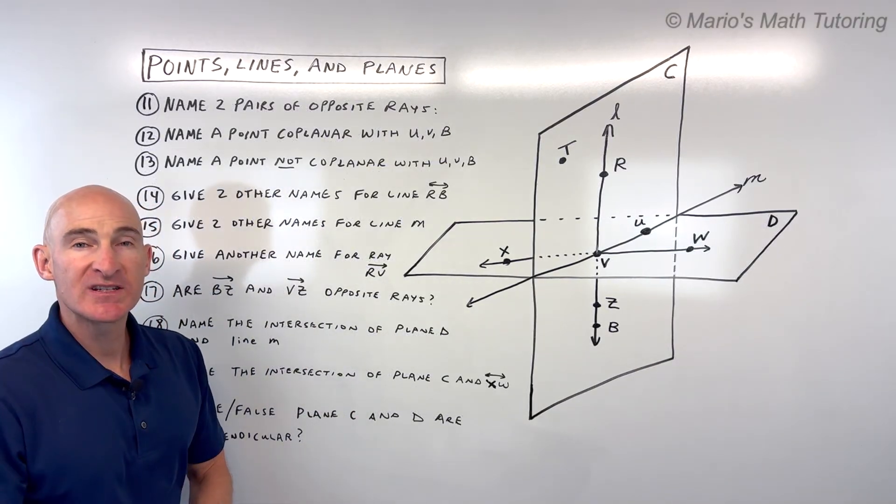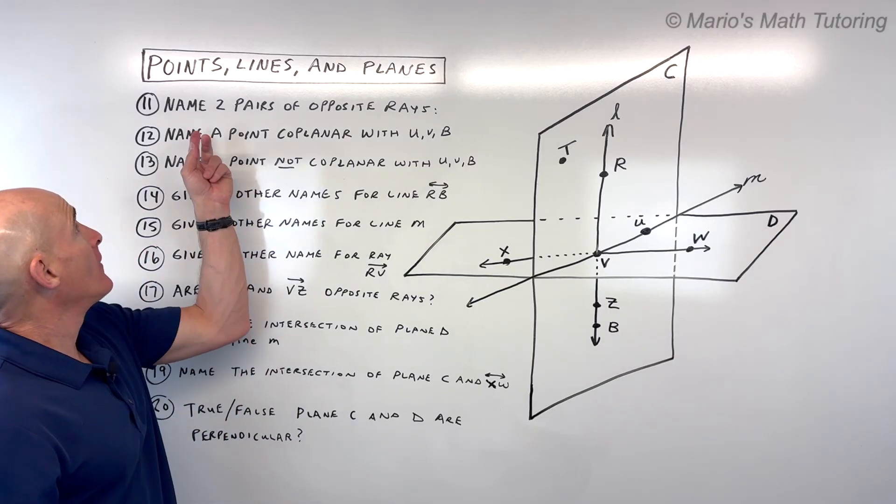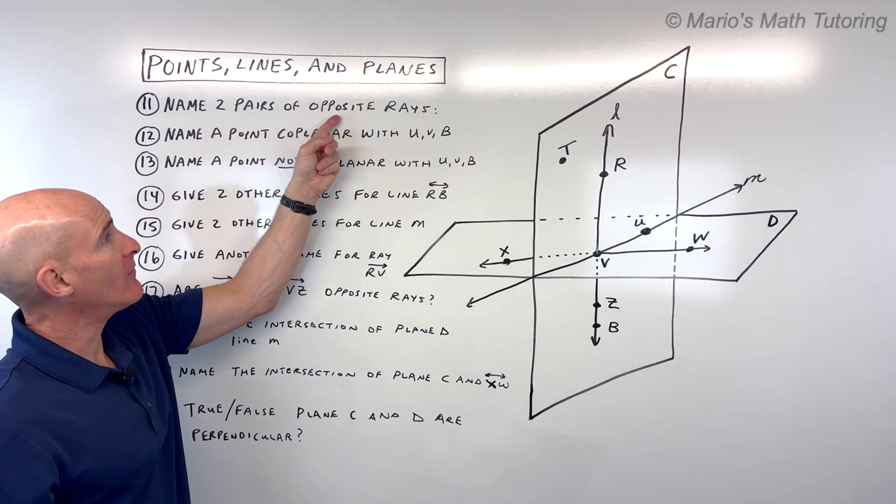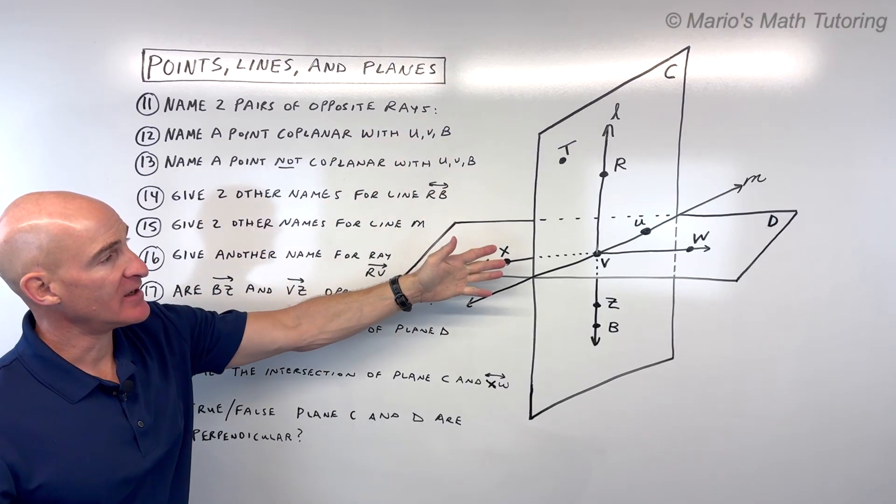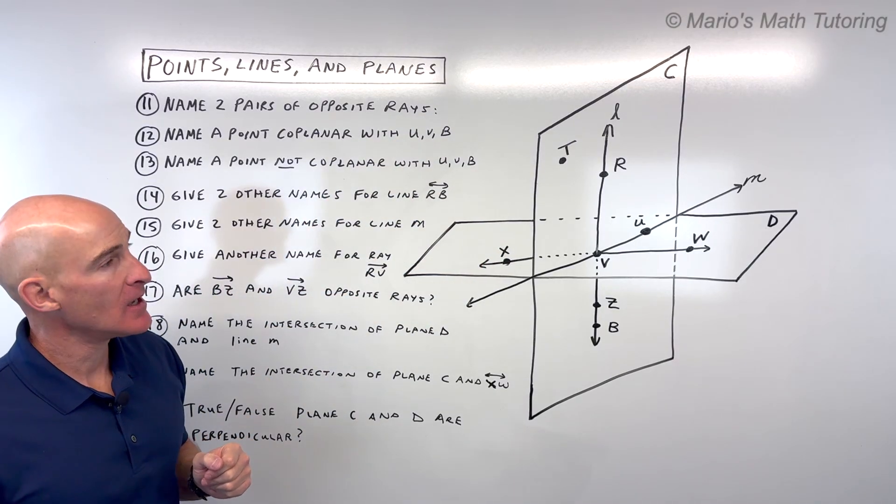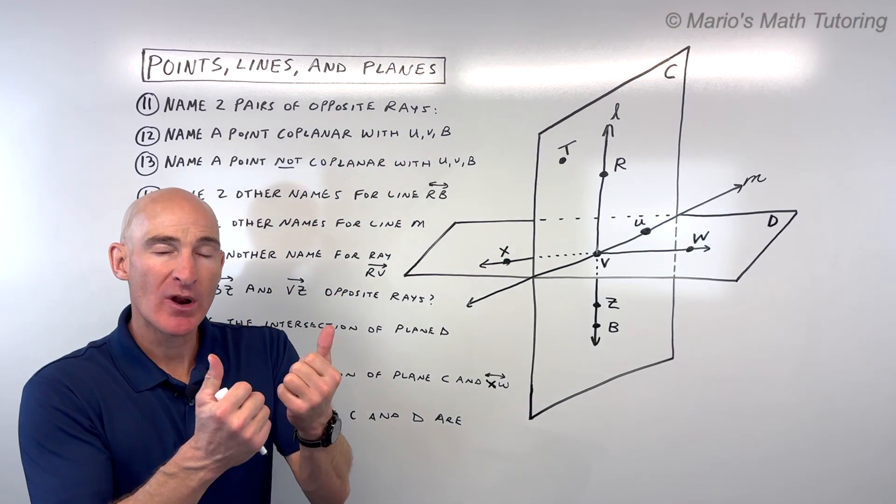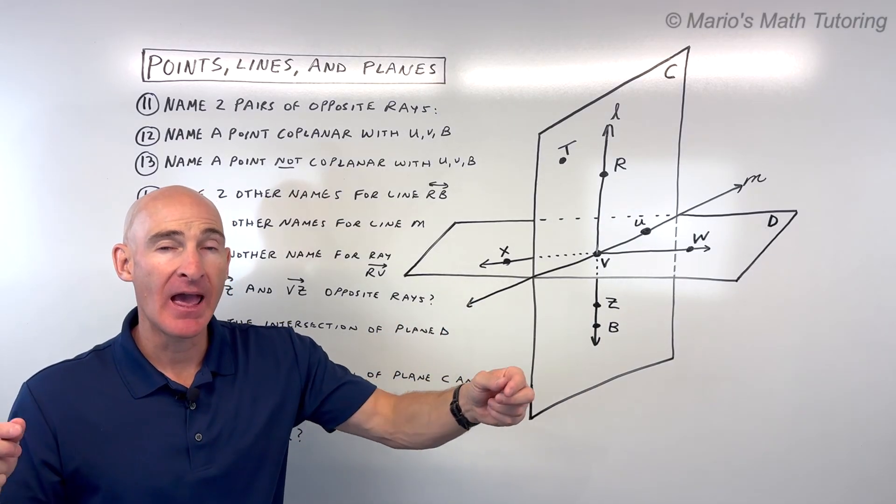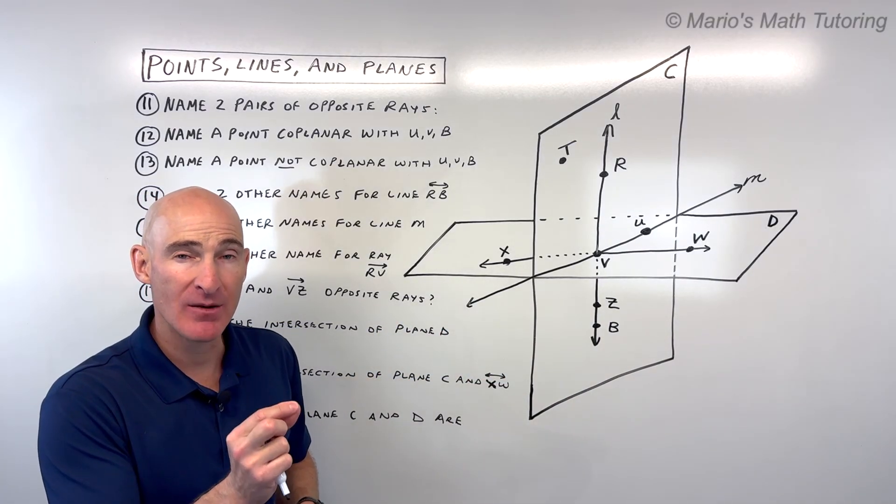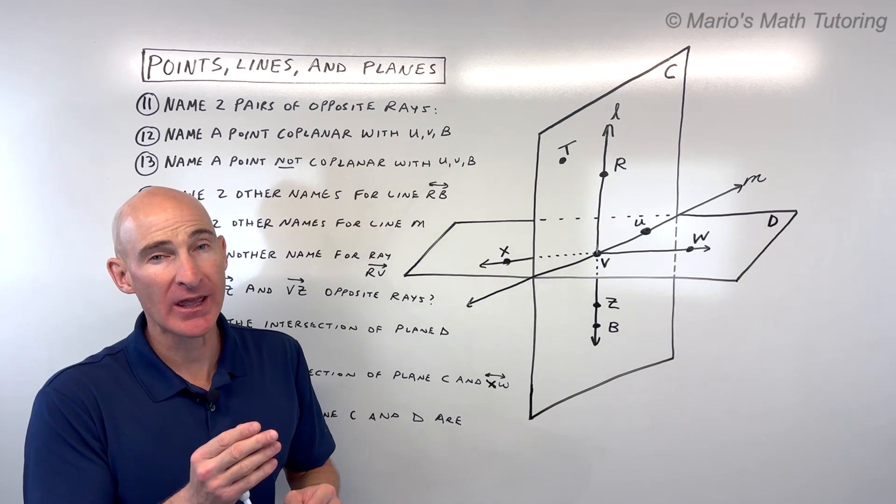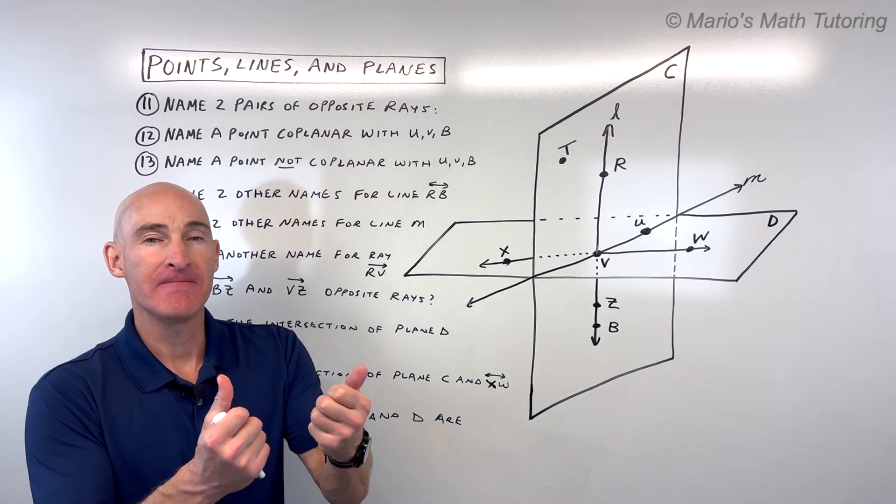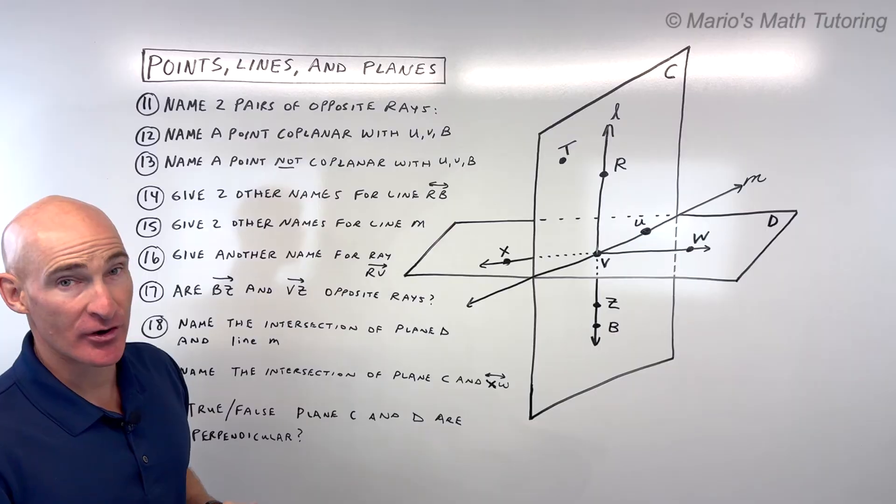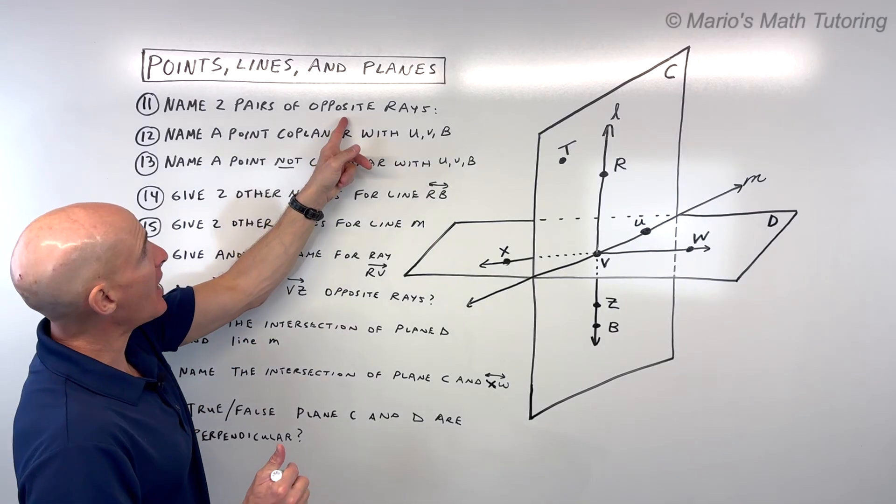For number 11, name two pairs of opposite rays. When you think of opposite rays, you want to make sure they're going 180 degrees opposite, like they form a line. You want to make sure they have that same endpoint. They call it an endpoint, but you can think of it as the starting point, and then they go opposite directions, 180 degrees.